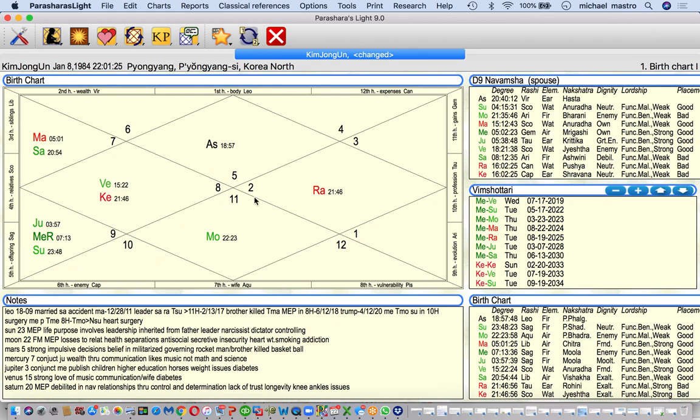And then if we look at the next mooltrikona sign we see Sagittarius ruled by Jupiter. Jupiter is in its own house here. This has to do with entertainment. He's really into entertainment and basketball and music, children and education, investments, all of that.